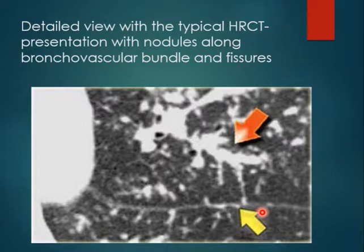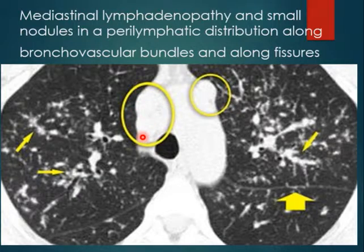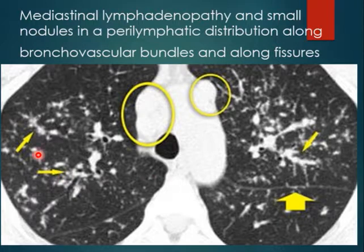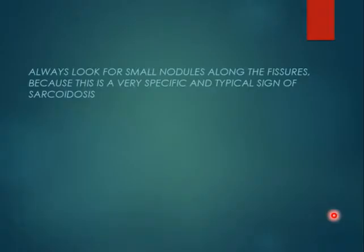Other features of sarcoidosis include mediastinal lymphadenopathy. You can see the bulging bilateral lymph nodes. There are also peribronchovascular nodules along the bronchovascular bundle and along the fissure. We should always look for small nodules along the fissures because it is very specific and typical for sarcoidosis — nodules along the fissures and the peribronchovascular tree.